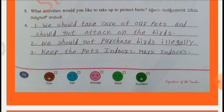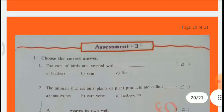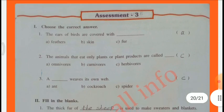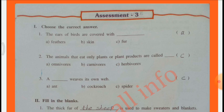We should take care of our pets and should not attack birds. We should not purchase birds illegally. Keep the pets indoors. Assessment 3: Choose the correct answer. The ears of a bird are covered with feathers. The animals that eat only plants or plant products are called Herbivores. A spider weaves its own web.